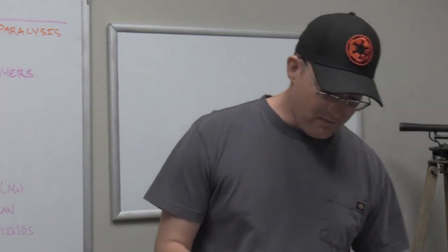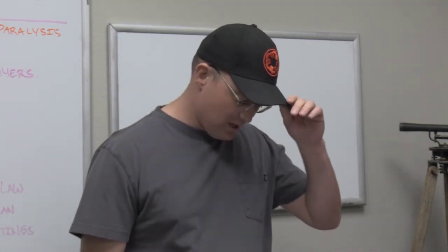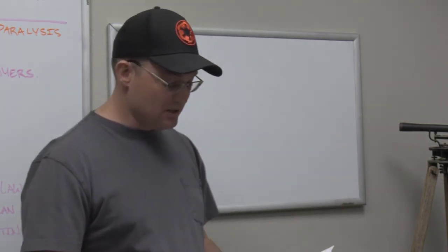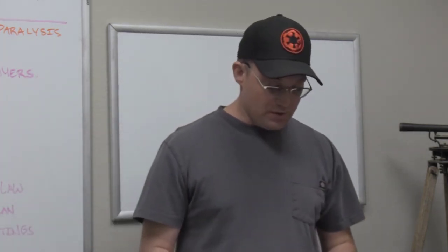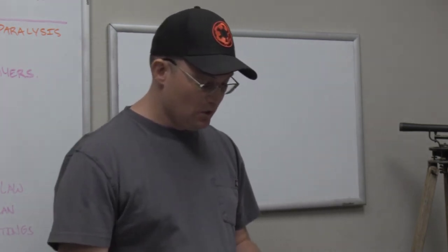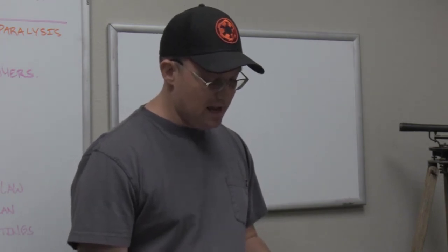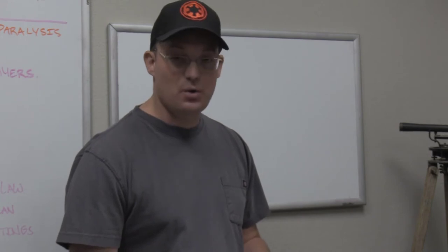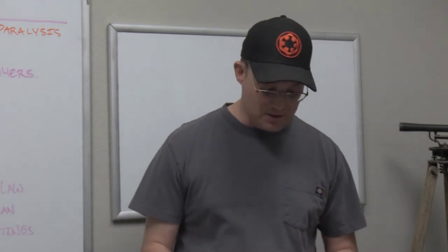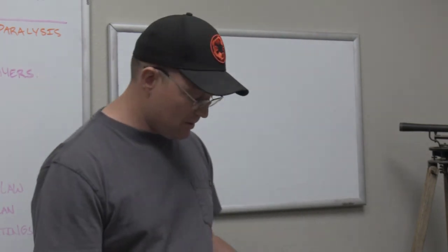Next we've got a set of field surveying questions starting with number four. Question four: after a total station has been coarse-leveled on a tripod, the next step in a typical setup procedure is: A, center the instrument over the control point; B, set the backside at zero; C, fine level; or D, run the auto compensator calibration. The answer is A — you need to center the instrument over the control point monument. You do that before you fine level, set the backside, and typically before you run any compensator. Question four is testing your knowledge of surveying equipment and field surveying procedures.